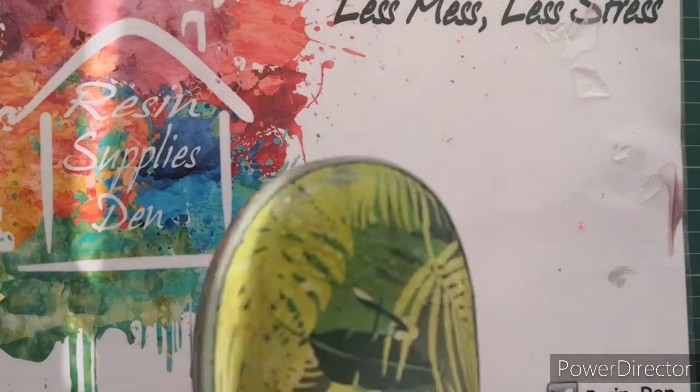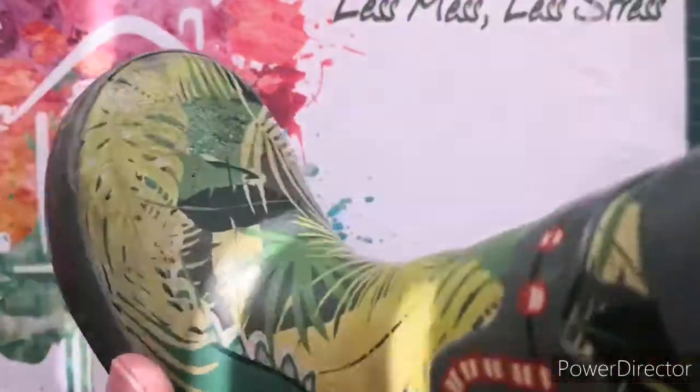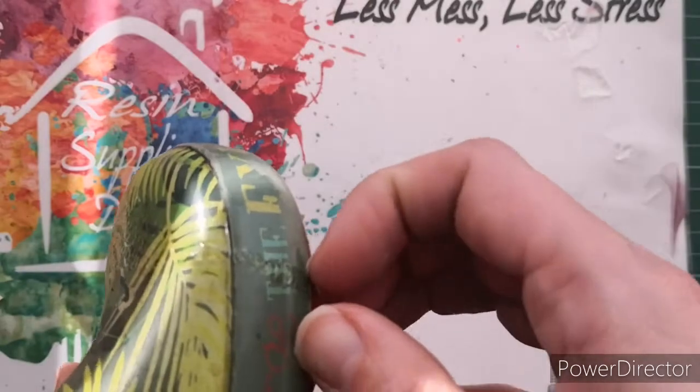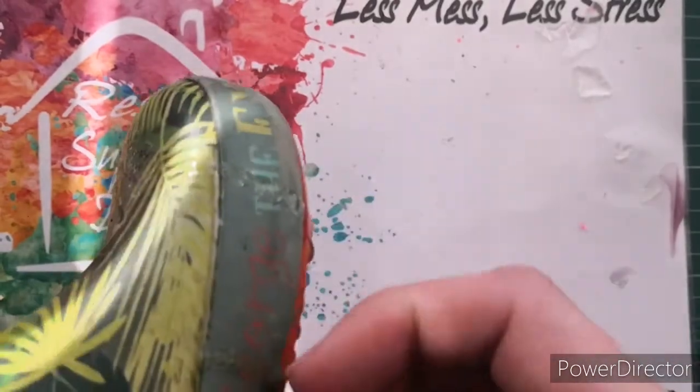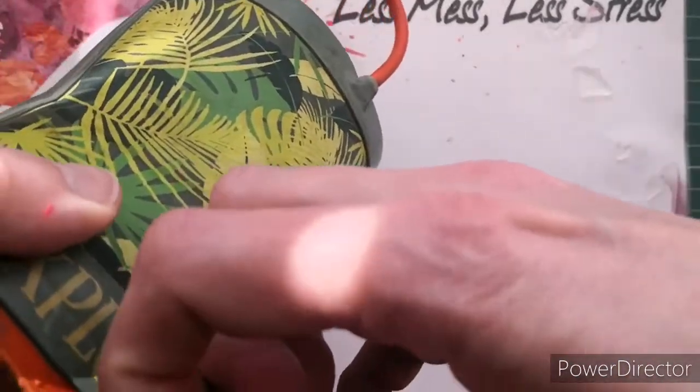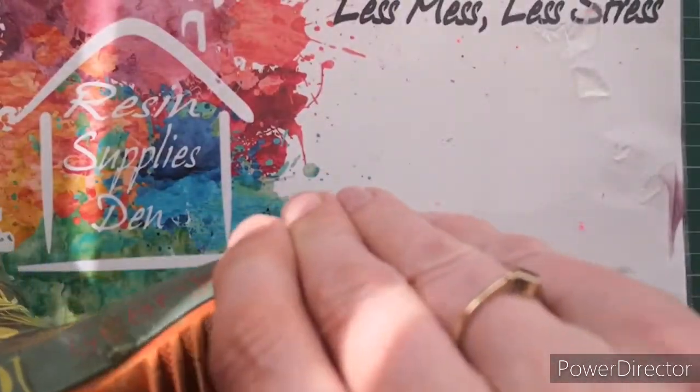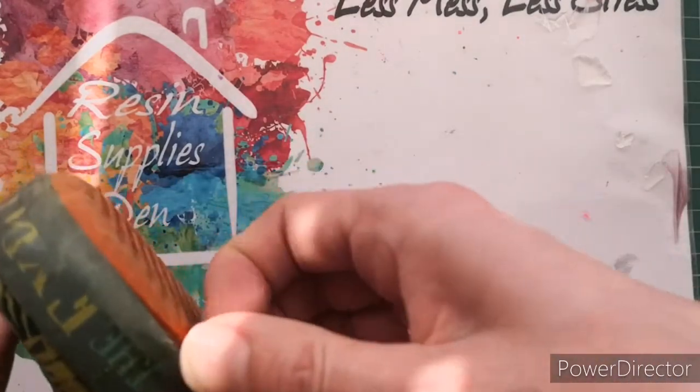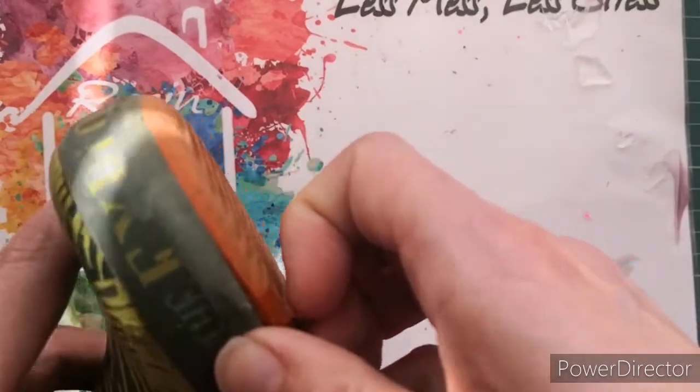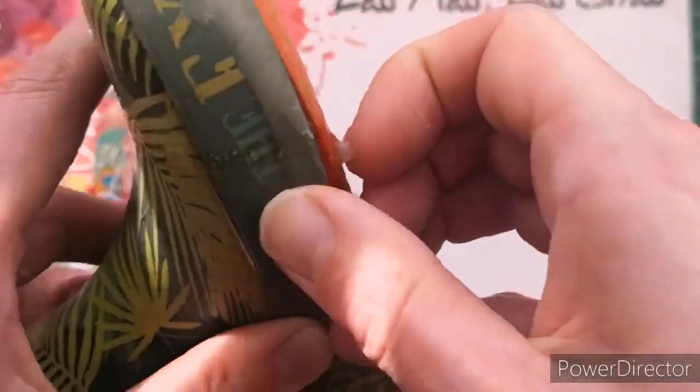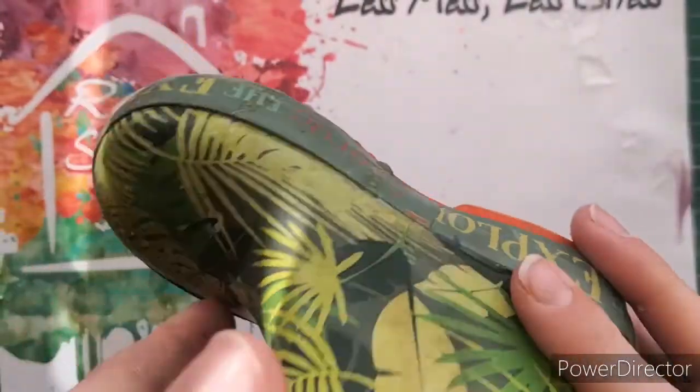And then this is a little welly boot from my daughter that she's nearly grown out of. And I thought rubber, you know, let's see if it sticks to rubber. So it's just dripped all the way around. You can see. Excuse me. And that is not really coming off that easily. So I would say, it is coming off, but it's not easy at all. So I would say that sticks to rubber.